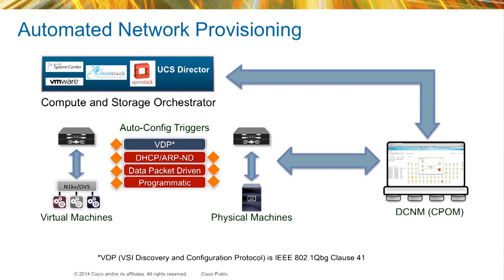We have a couple of different things to go over in the architecture. As an orchestrator, we have the UCS Director sitting on top. The icons represent virtual machines — Nexus 1KV or OVS depending on the hypervisor. We also have the DCNM, which is our Cisco Prime Data Center Network Manager, which acts as a central point of management. That's where we store all the configuration profiles that you can enter manually, through OpenStack, or by running a Python script using our RESTful APIs to interface with the DCNM application and create that profile.